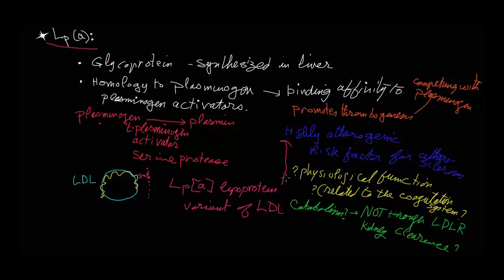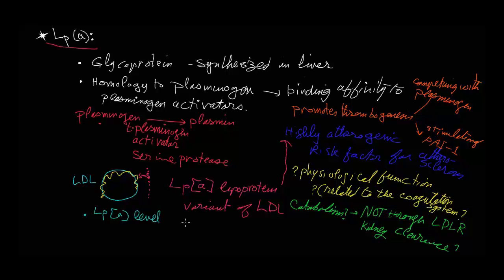Thus Lp(a) inhibits fibrinolysis. The second mechanism for promoting thrombogenesis is by stimulation of plasminogen activator inhibitors. We have a plasminogen activator inhibitor called PAI-1, which is stimulated by Lp(a), so it inhibits thrombolysis and promotes thrombogenesis. These are the two possible mechanisms of action as an atherogenic factor. We also have to notice that Lp(a) levels greatly differ between populations, and the mean value is high in Africans.